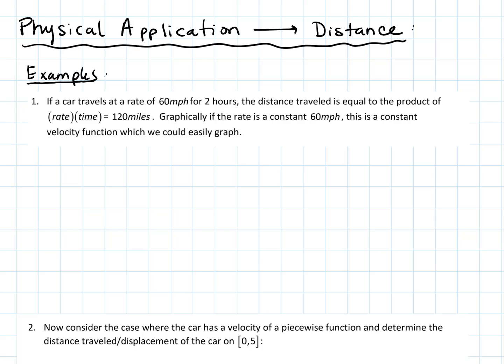Let's talk about a physical application — in this case, the connection of distance traveled to the velocity of a car. If we have a car that travels at 60 miles per hour for two hours, it's pretty clear that the distance would be rate times time, so it would be 120 miles.